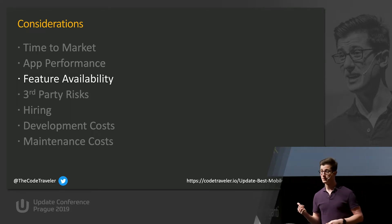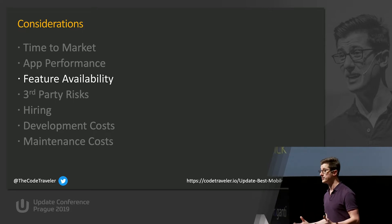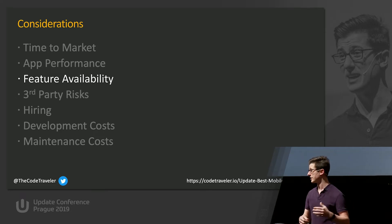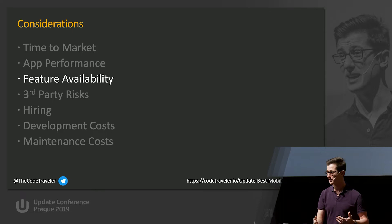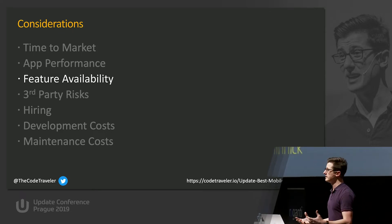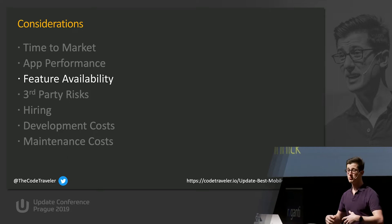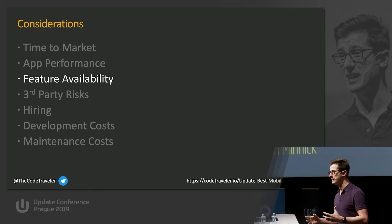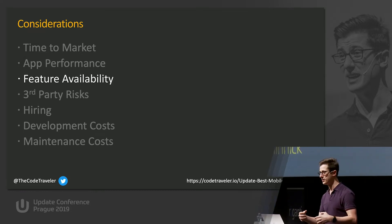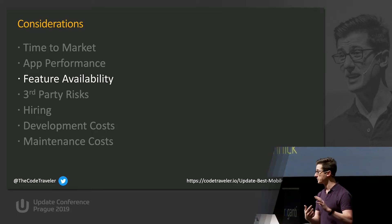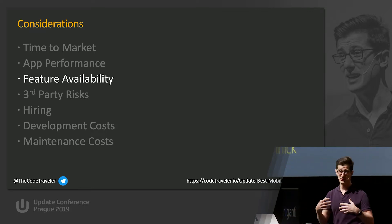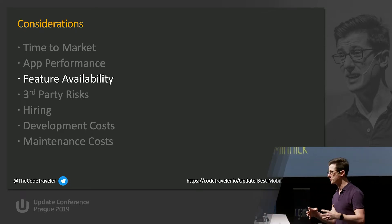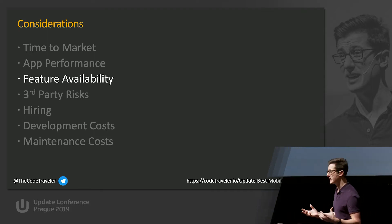Feature availability — now this is a big one. What are you doing with your app? Our mobile devices come with a suite of features: push notifications, Bluetooth, geolocation, storage. Maybe you're making an augmented reality app that needs to use the camera and take advantage of all the machine learning built into the processors. iOS offers an SDK called ARKit, Google has ARCore, and you really need that performance. So is that available to you in your chosen framework?